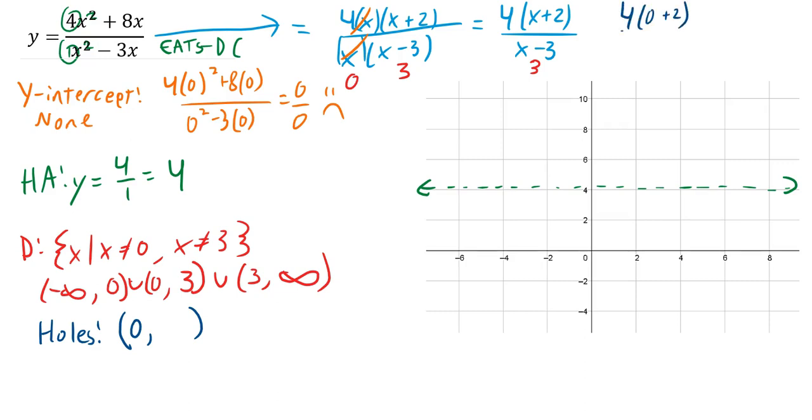That's 4 times (0 plus 2) over (0 minus 3). 4 times 2 is 8 over negative 3. The y-coordinate of my hole is negative 8/3. That's almost negative 3—negative 8/3 is between negative 2 and negative 3. So I put a hole at (0, -8/3).